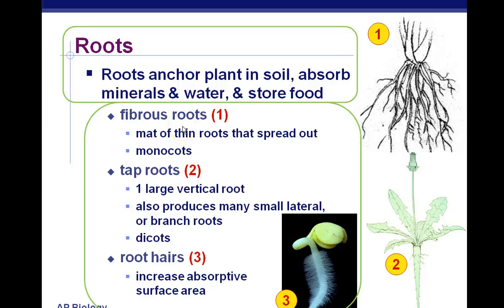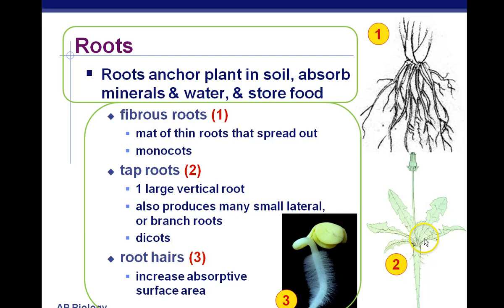Tap roots have one large vertical root — think of a carrot as a great example of a tap root — and that's typical of dicots. Here we have a tap root on a weed: if you break off the top part of the weed, there's still starch in that root, which is broken down for sugars and used as energy to make more of the plant.